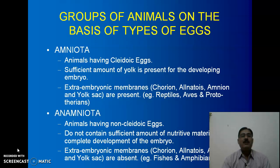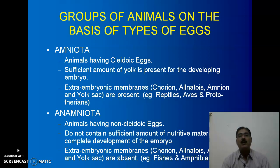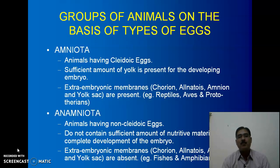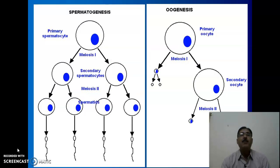On the basis of egg type, we can classify the higher vertebrates into two categories: Amniota and Anamniota. Amniota includes those animals which are truly terrestrial because of the presence of the amnion, which forms a cavity containing amniotic fluid. This amniotic fluid acts like a liquid medium in which the developing embryo is present, and it prevents desiccation — which is the main problem for terrestrial animals during development.